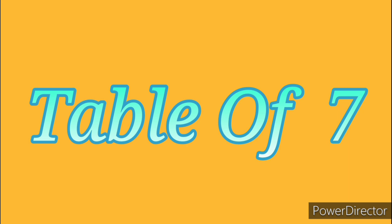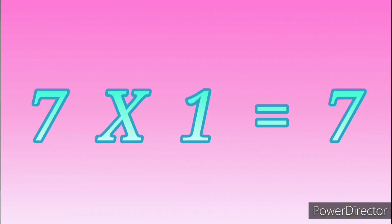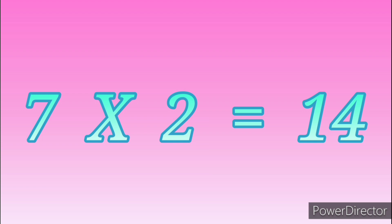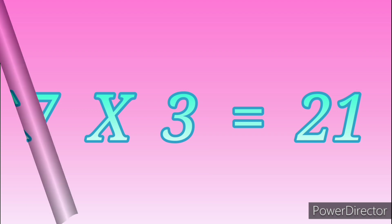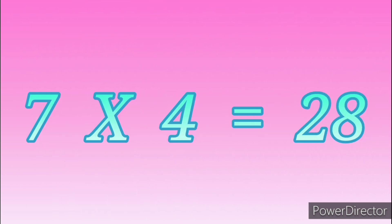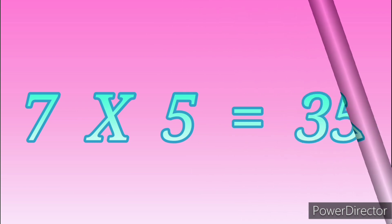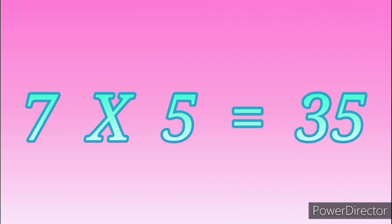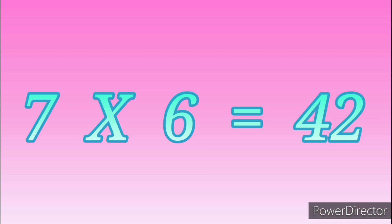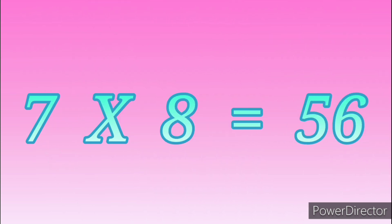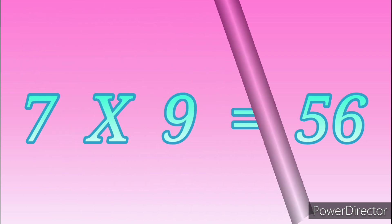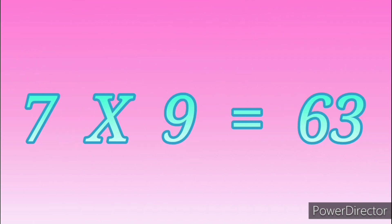Table of Seven: 7 ones are 7, 7 twos are 14, 7 threes are 21, 7 fours are 28, 7 fives are 35, 7 sixes are 42, 7 sevens are 49, 7 eights are 56, 7 nines are 63.